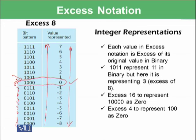And in excess 16, you would need 10000 which is 16 to represent the 0, and similarly, the following will be representing positive and the preceding will be representing negative numbers.